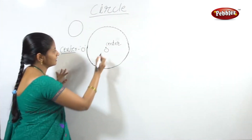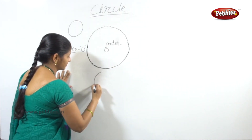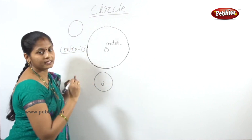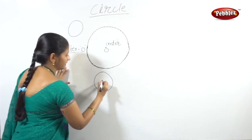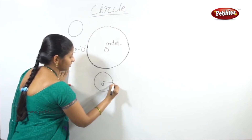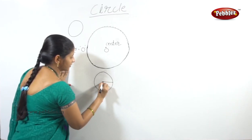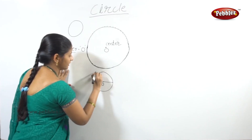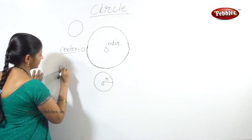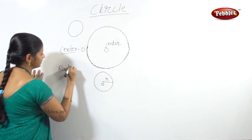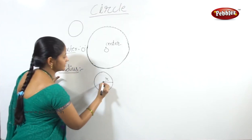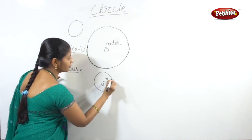Next, the center of the circle is a fixed point at 30 cm. The distance from the center to any point on the circle is called the radius.